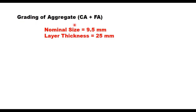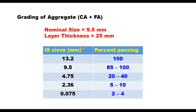The combined grading of coarse aggregate and fine aggregate should be as given in the specified table. The nominal size of aggregate is 9.5 mm and OGFC is generally laid in a thickness of 25 mm. It is a gap-graded gradation because many sizes are missing from this grading.